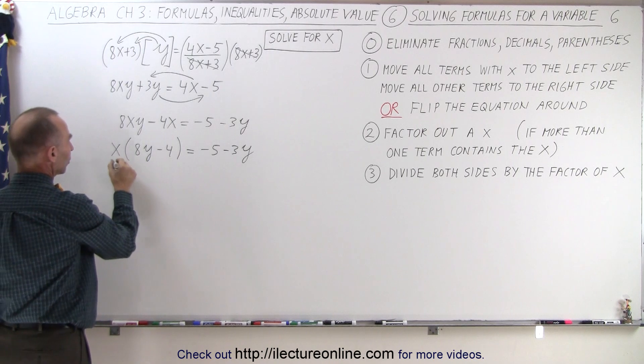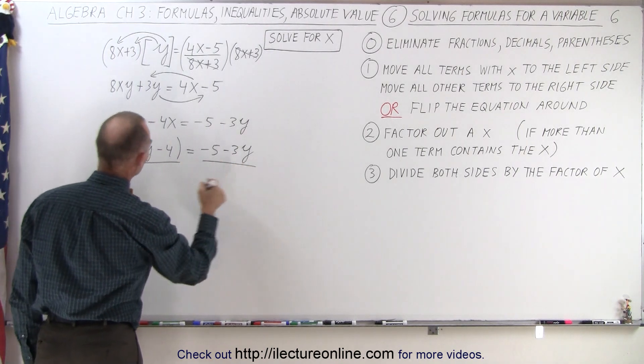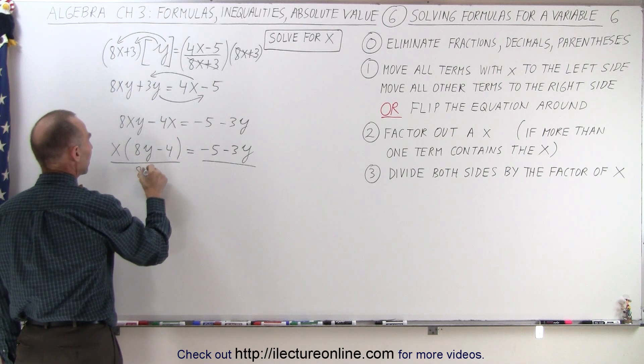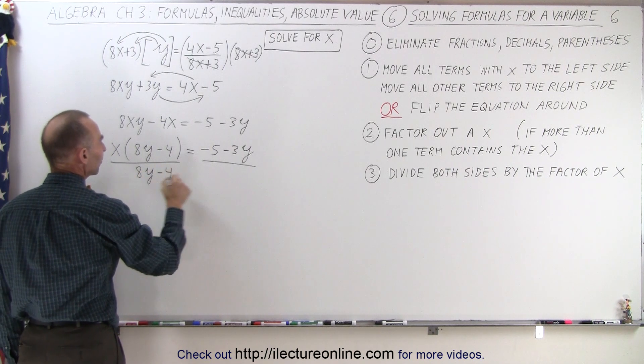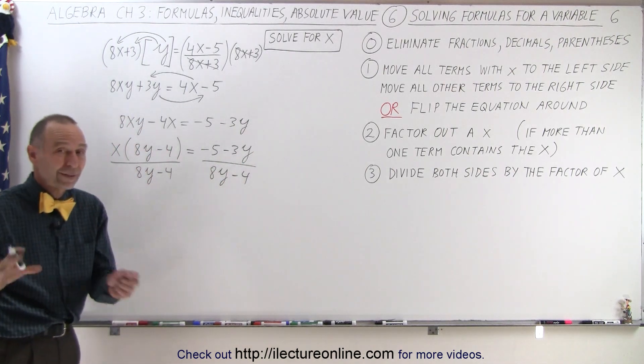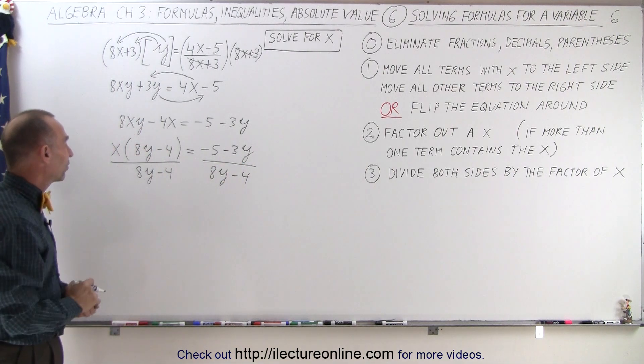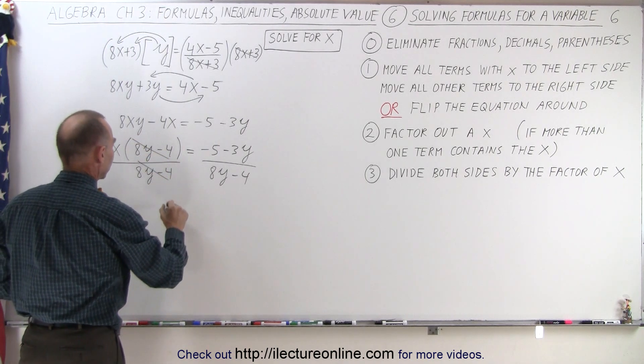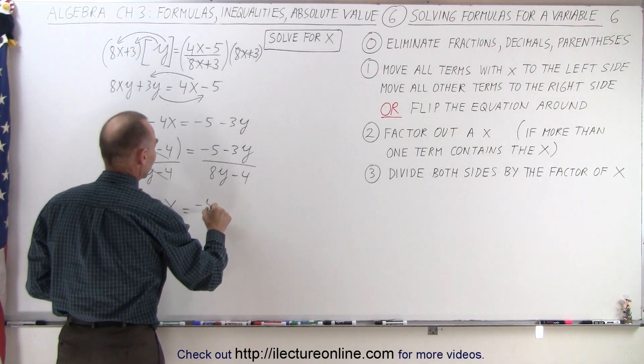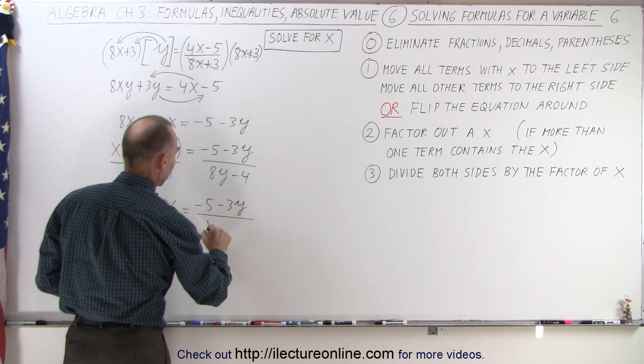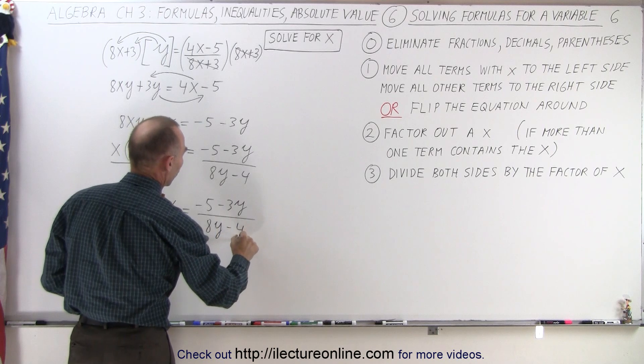And finally, I'm going to divide both sides of the equation by the factor of x, so that becomes 8y minus 4 on the left side and of course 8y minus 4 on the right side, because I need to do exactly the same thing to both sides of the equation. On the left side, this cancels out, and I end up with x is equal to minus 5 minus 3y divided by 8y minus 4.